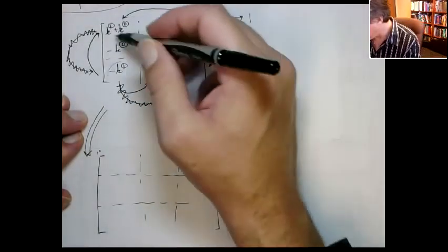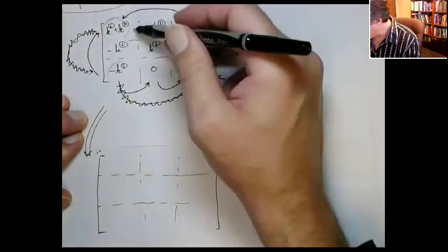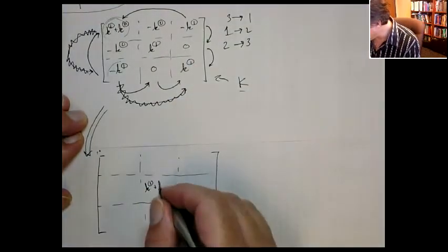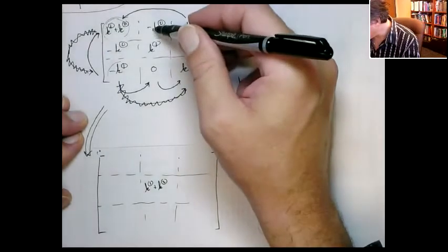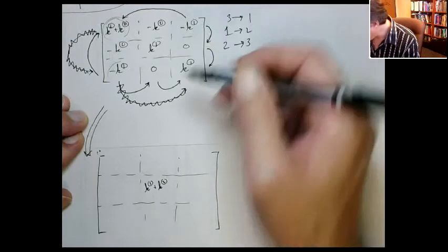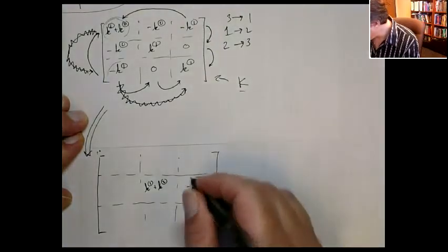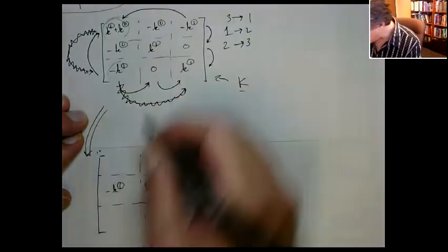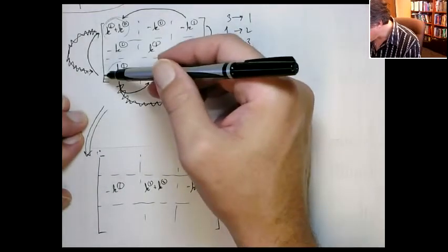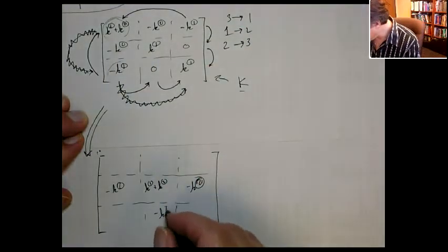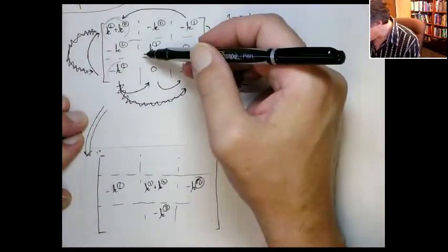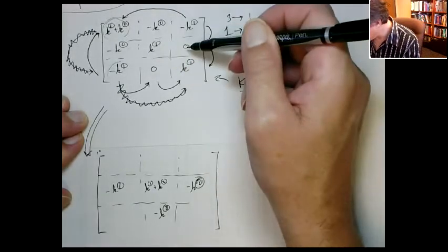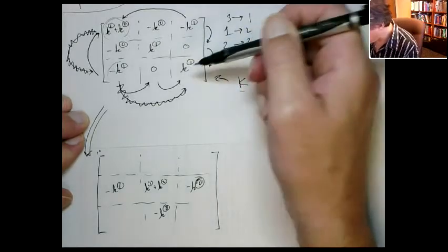So this one here goes to the second row, second column. So it's a K1 plus K2. This one here goes to the third column, second row. So that's going to go here. This one goes to the first column, second row. This one goes to third row, second column. This entry here goes to third row, I'm sorry, third column, third row. What happened there? Did I do that right?